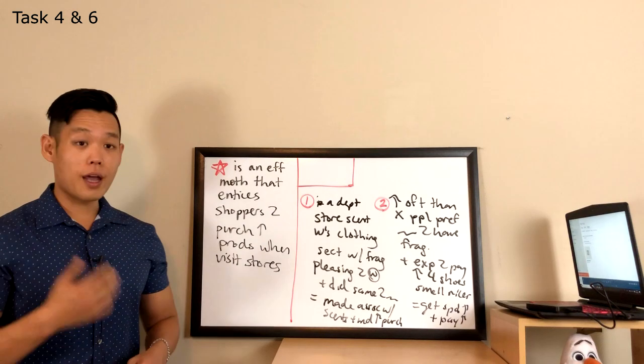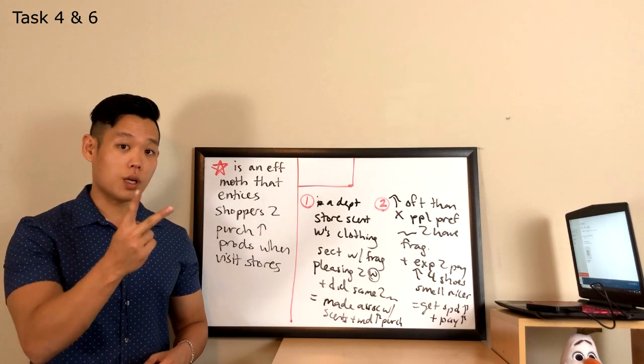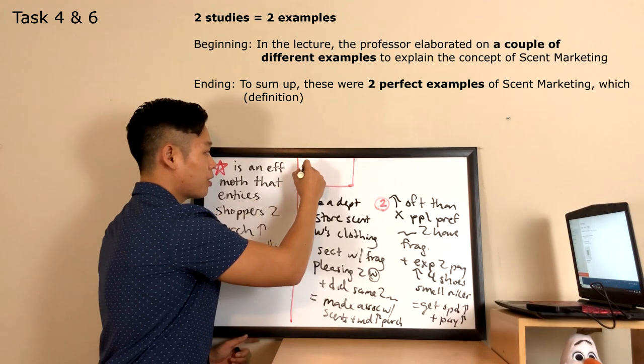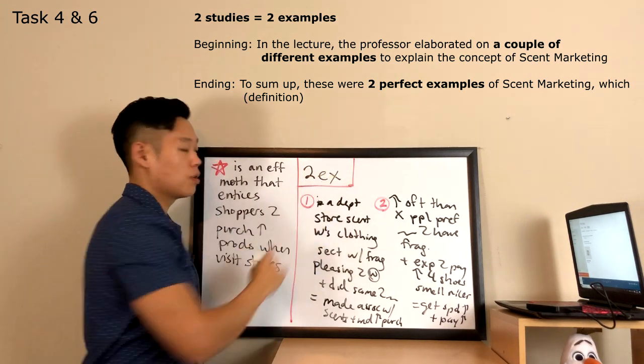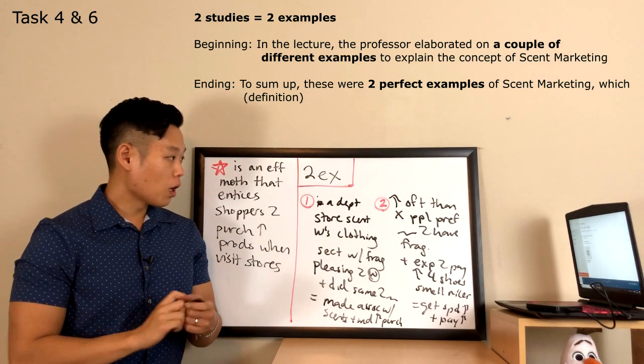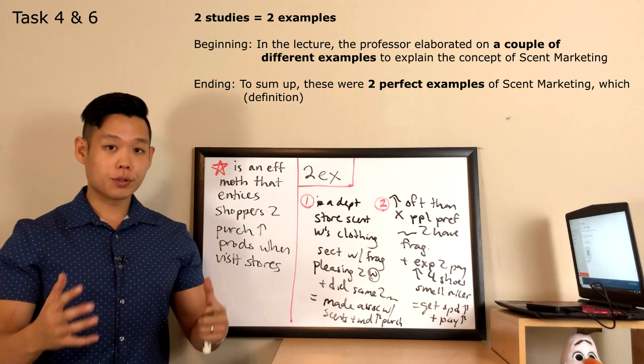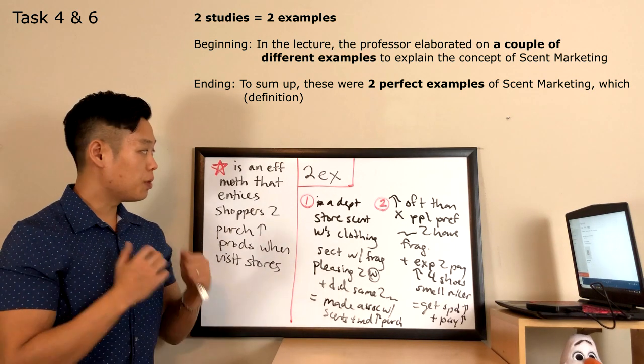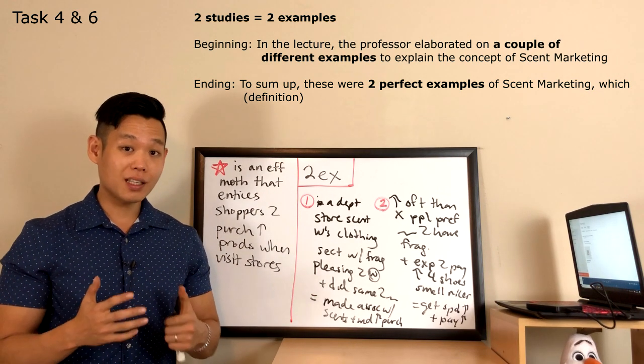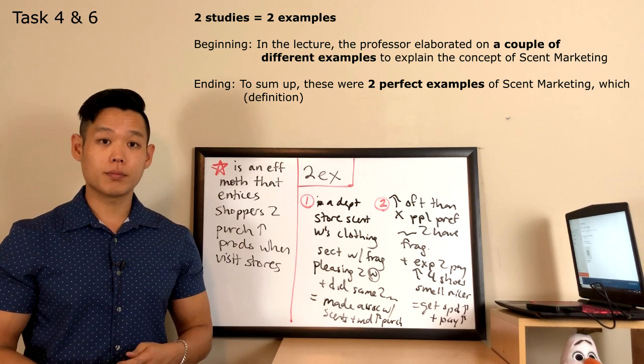In this lecture, the professor ended up talking about two studies. So, what we're going to understand this as is two examples. Now that we know what the professor talked about in the lecture, we should be able to organize not only the beginning sentence, but also the ending statement.